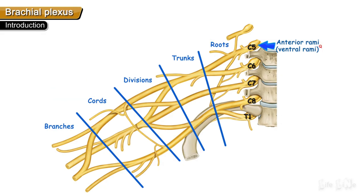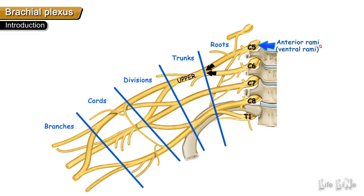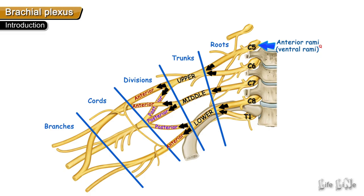The brachial plexus is formed from the anterior rami of spinal nerves C5, C6, C7, C8, and T1. These roots unite to form the trunks. C5 and C6 unite to form the upper trunk, C7 continues as the middle trunk, and C8 and T1 form the lower trunk. Each trunk then divides into an anterior division and a posterior division, giving six divisions in total.